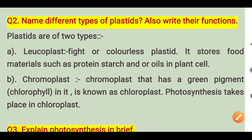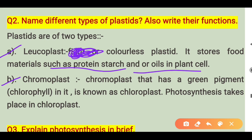Question number 2: name different types of plastids and also write their functions. We have two types of plastids — Leucoplast and Chromoplast. Leucoplast is colorless and stores proteins, starch, and oils in plant cells. Chromoplast contains pigments including the green pigment chlorophyll, which is specifically in the chloroplast. Photosynthesis takes place in the chloroplast. So Leucoplast functions in food storage and Chromoplast functions in providing color and enabling photosynthesis.